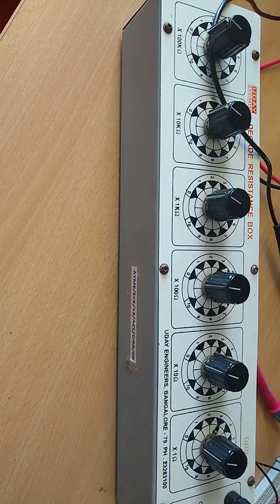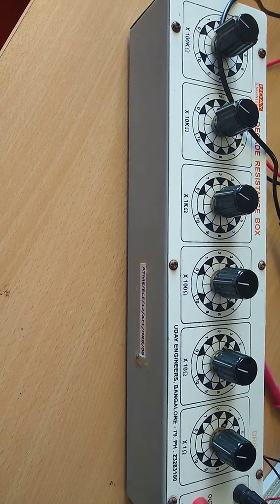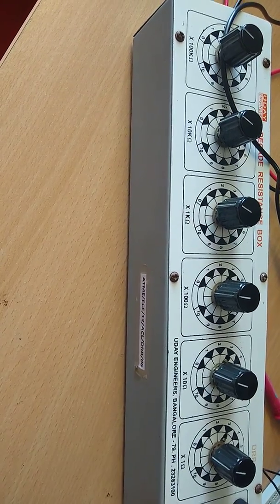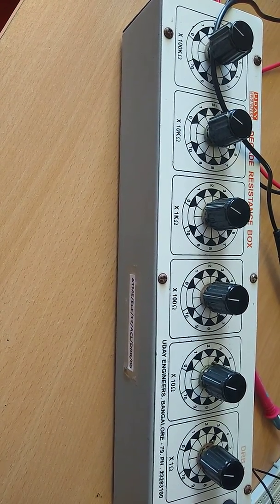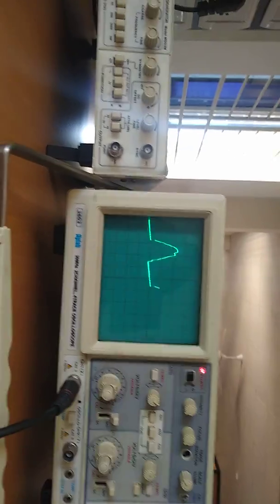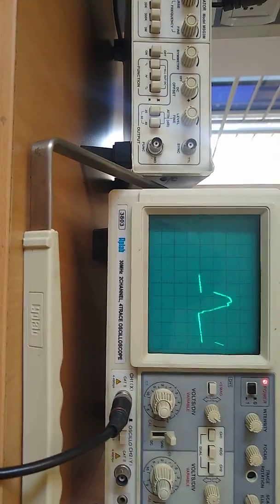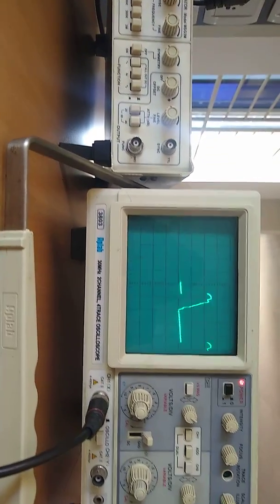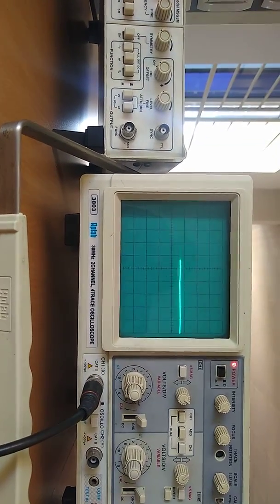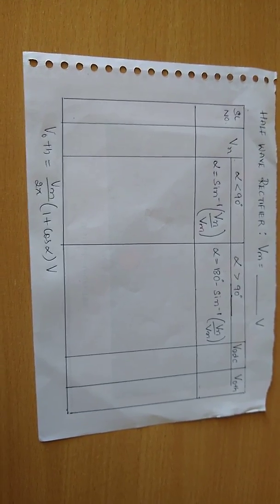Now vary the firing angle by increasing the value of resistance in DRB in steps. Observe the waveforms and note down the corresponding values of VN from CRO and V0 DC from the DC voltmeter. The readings are tabulated in the tabular column as shown.